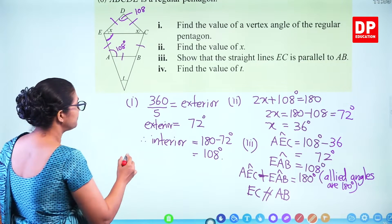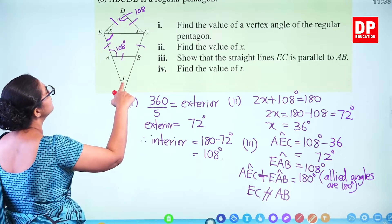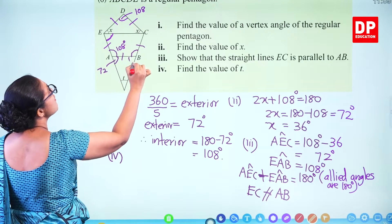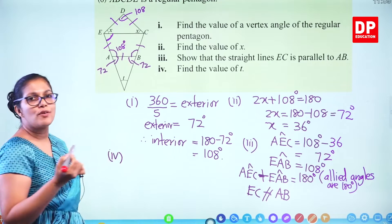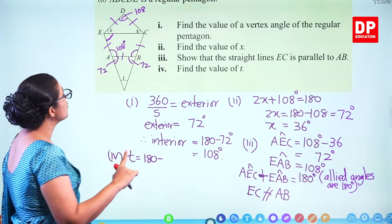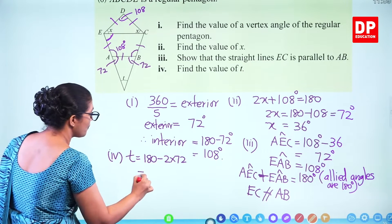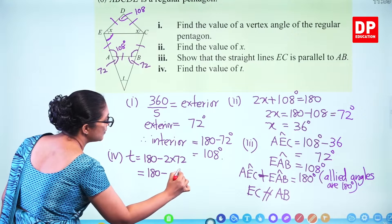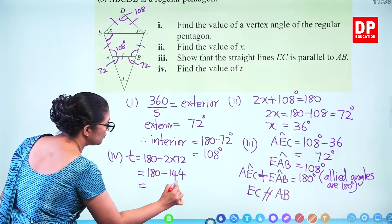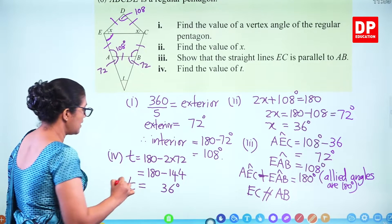Find the value of T. This angle is 108, so this becomes 72. T equals 180 minus 72 minus 72 equals 180 minus 144 equals 36 degrees.